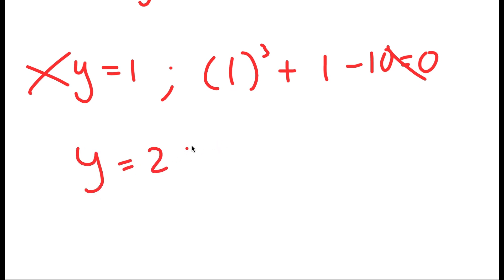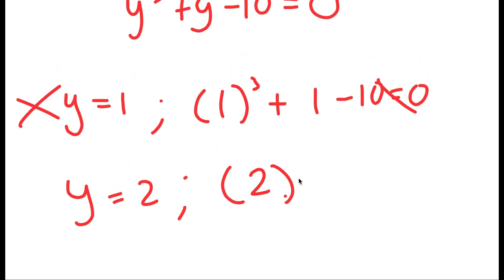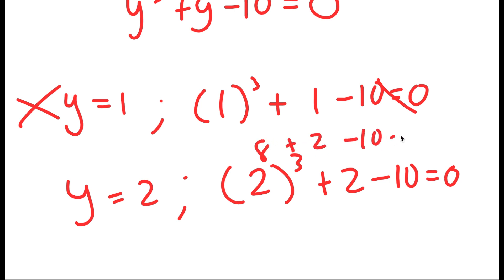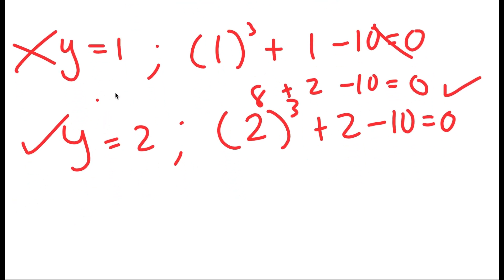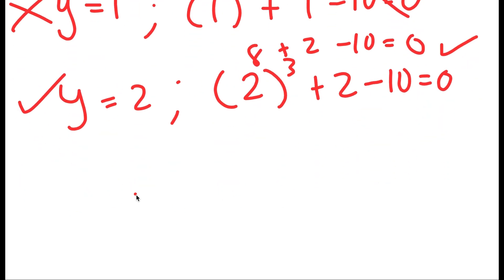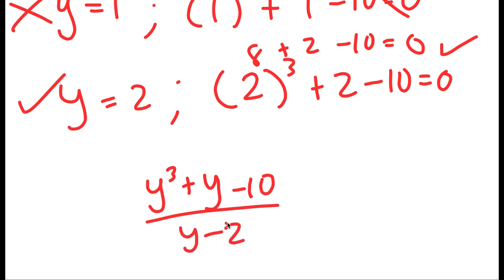Now I'm going to try y equals 2. So when y equals 2, I get 2 to the power of 3 plus 2 minus 10 is equal to 0. Now 2 to the power of 3 is 8. So I have 8 plus 2 minus 10: 8 plus 2 is 10, 10 minus 10 is 0. So this works, meaning y equals 2 is a solution.